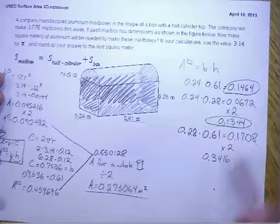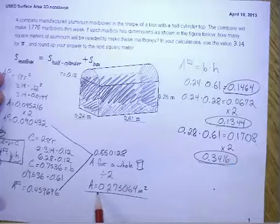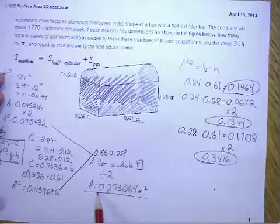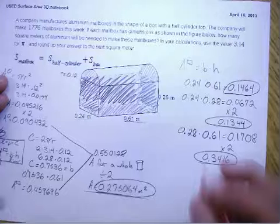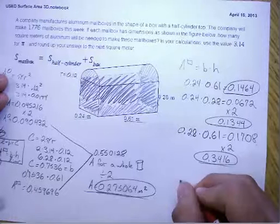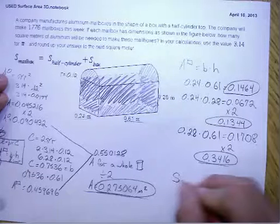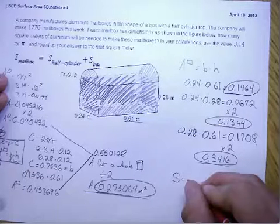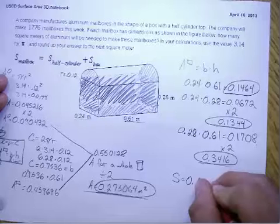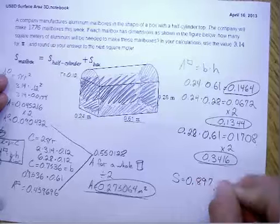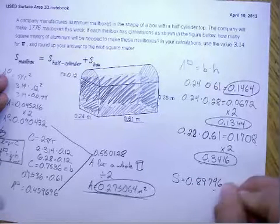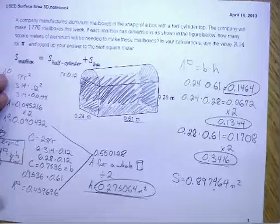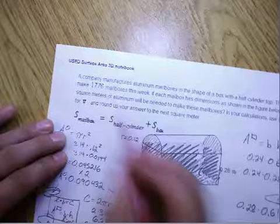Now, what I have found is the area of each one of the sections that we need to do. I will add each one of those together. Adding them together, I get a total surface area for one mailbox, I get 0.897464 meters squared, since we're finding areas squared.